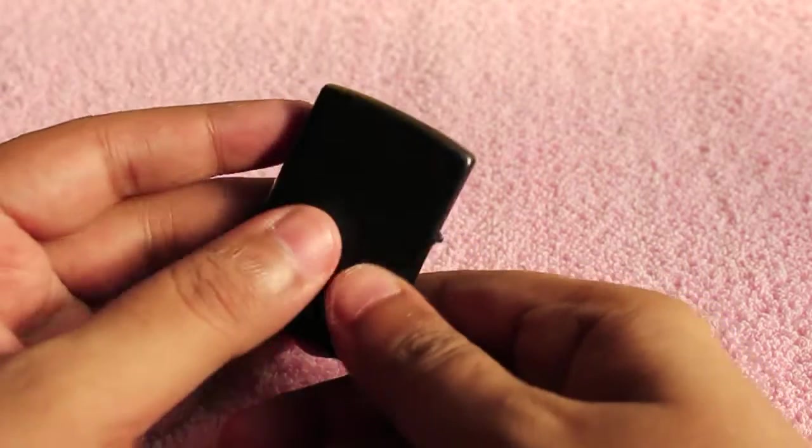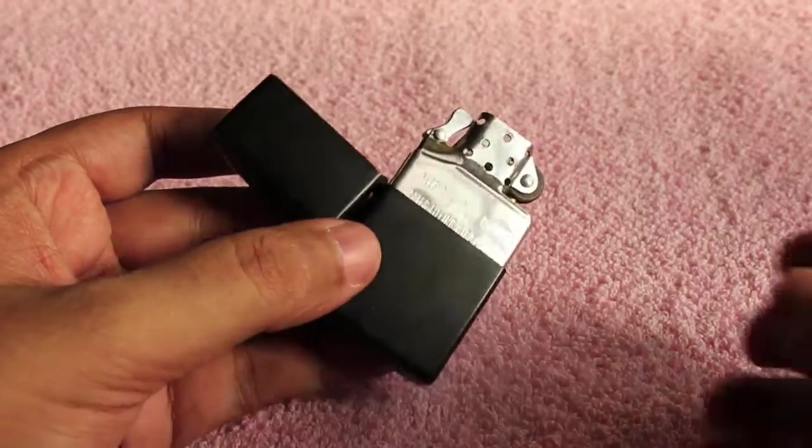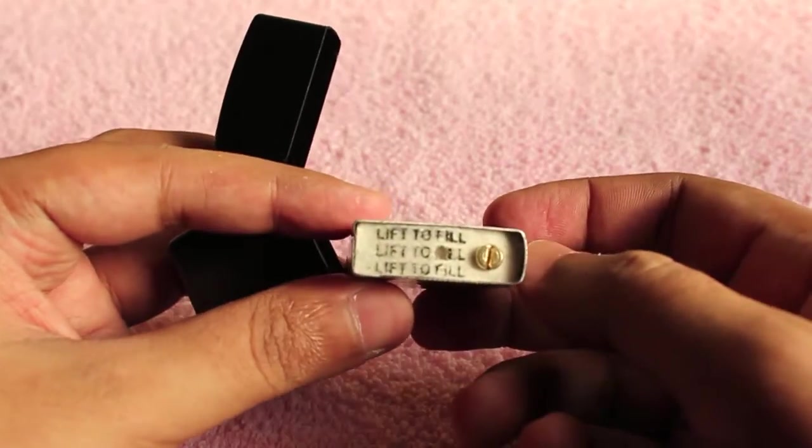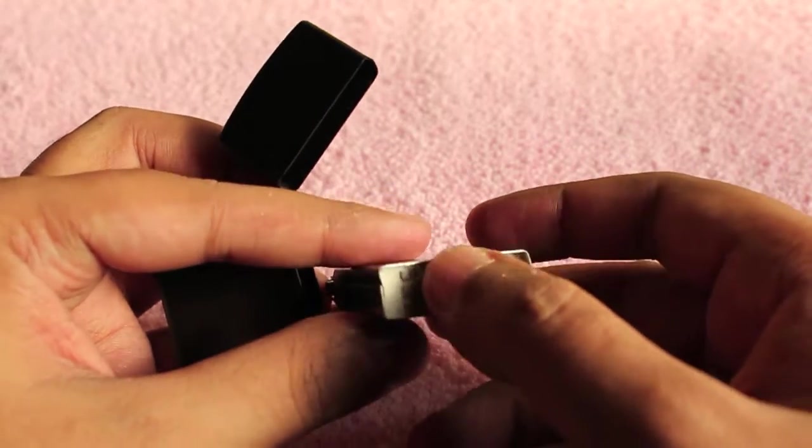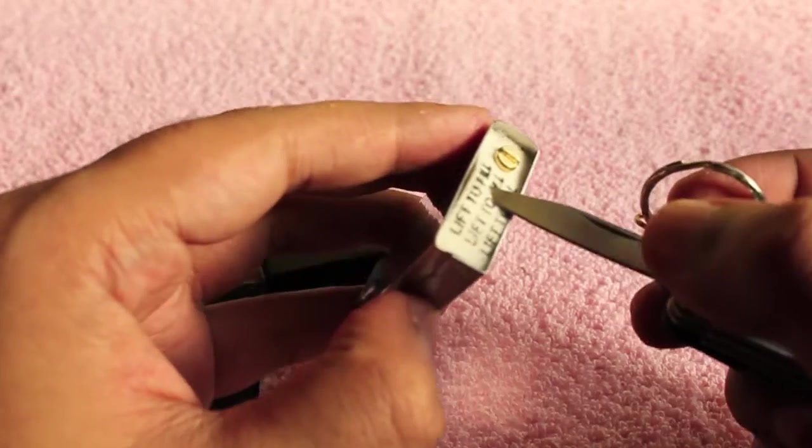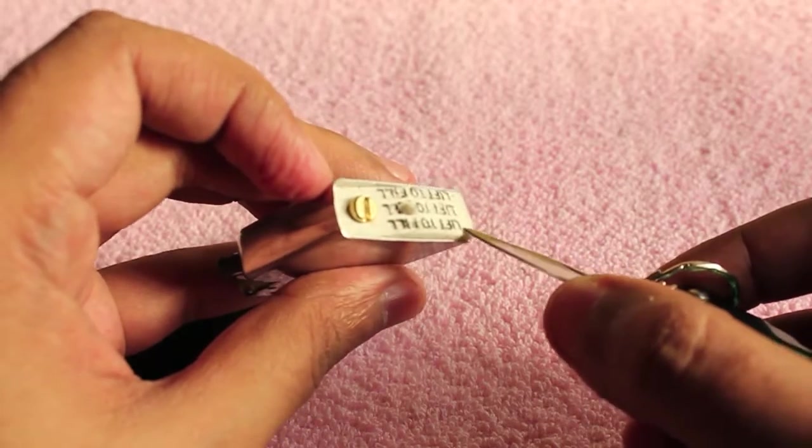And this is how you refill it. You open the back and there's a piece of cotton. You have to lift it up. Once you lift it, there's normal cotton inside.